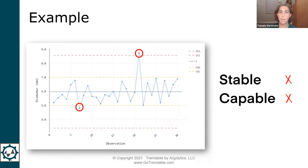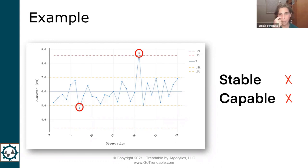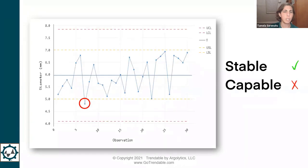Whenever points exceed the red control limits, that means our process is not stable — the variation is too great. When points exceed the yellow customer specification limits, you're not capable of meeting customer specs. Some folks might cringe at seeing spec limits on a control chart — there is some controversy around that, which I'll come back to. For now, we can see we have an unstable, not-capable process with points out of control.